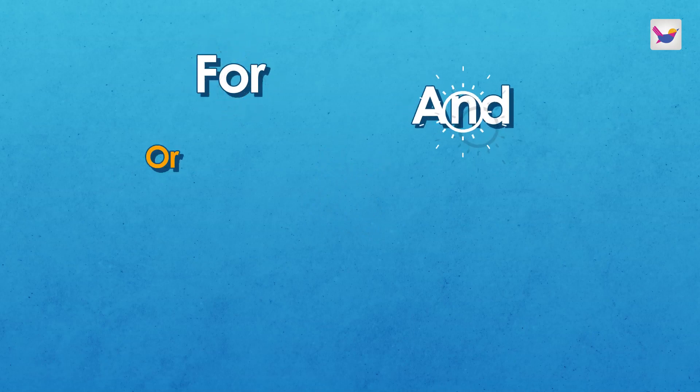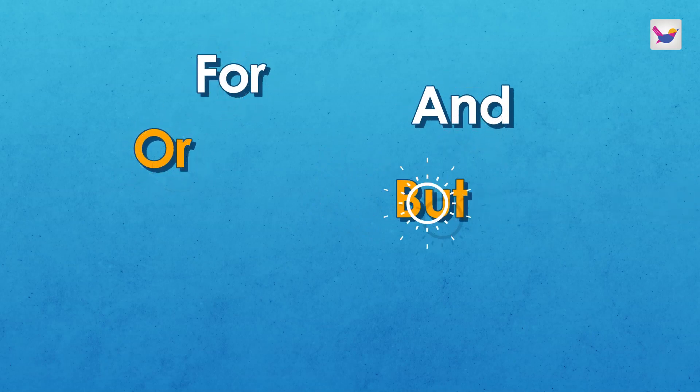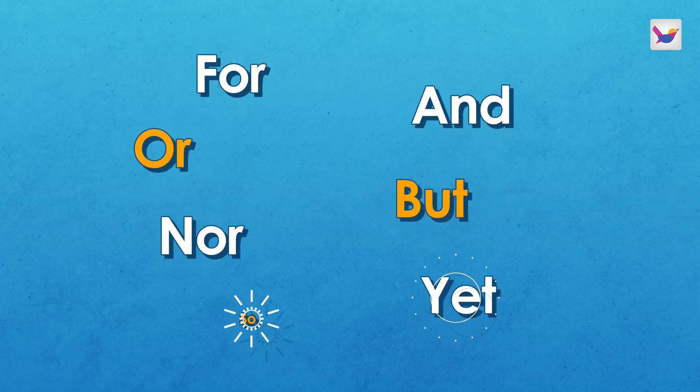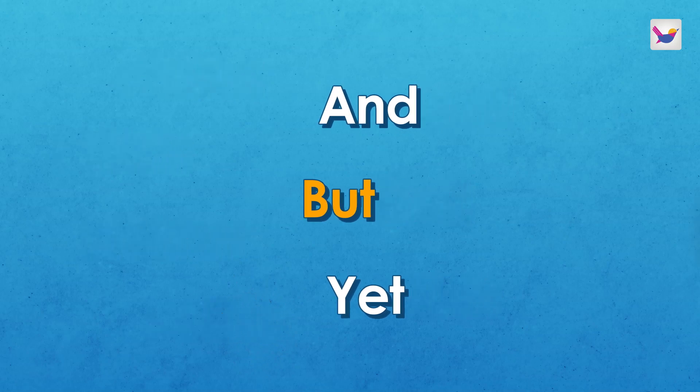The coordinating conjunctions in English are: for, and, or, but, nor, yet, even, so.